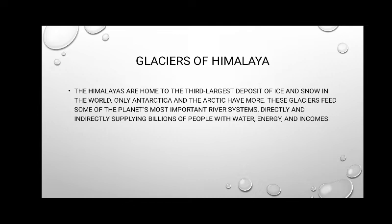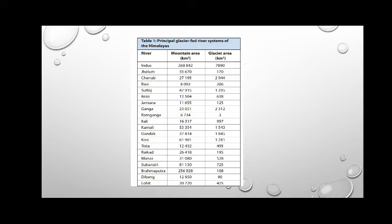The Himalayas are home to the third largest deposit of ice and snow in the world — only the Arctic and the Antarctic have more. These glaciers feed some of the planet's most important river systems, directly and indirectly supplying billions of people with water, energy, and incomes. In the tabular column shown, I have mentioned a few rivers fed by the Himalayas.